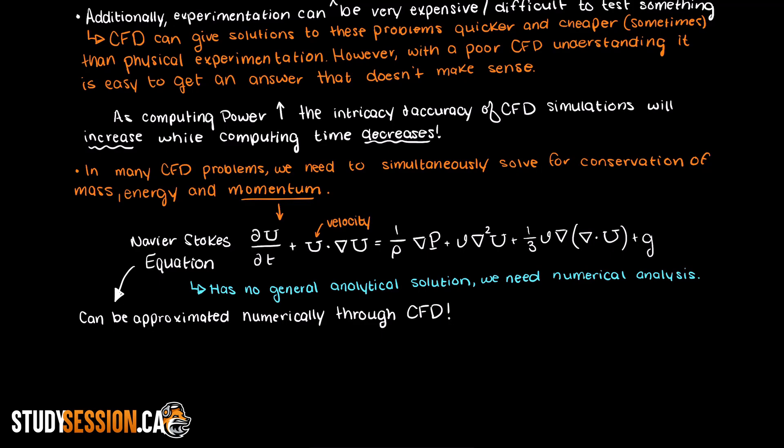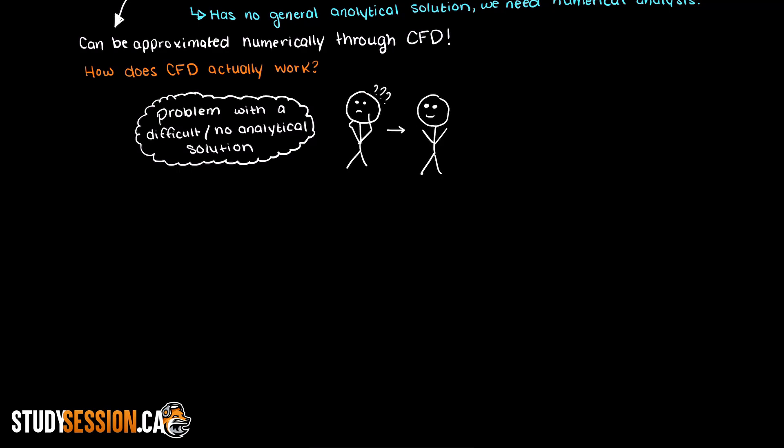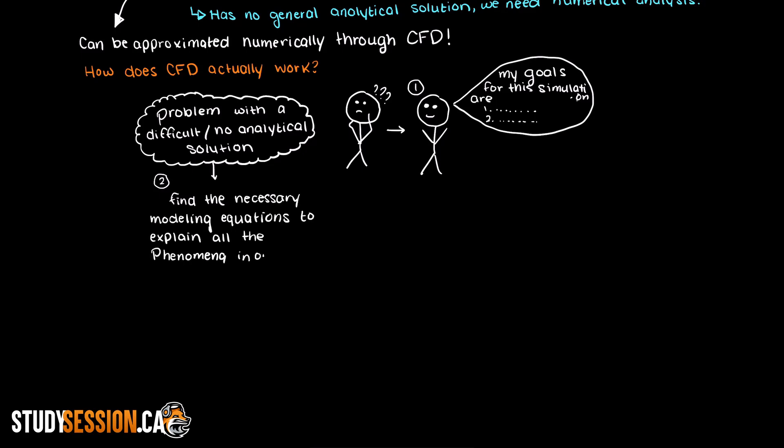I am now going to talk a bit about how CFD actually works, but do not get too overwhelmed. We will walk through all these steps more slowly in future videos. I just want to give you a broad overview of how a problem can be solved using CFD. Alright, the way that CFD works is that we begin with some problem that cannot be solved analytically. We give it lots of thought and identify our expected outcomes and goals for our simulation as much as we can. In doing so, we develop our necessary modeling equations to explain all the phenomena that is affecting our object of study.